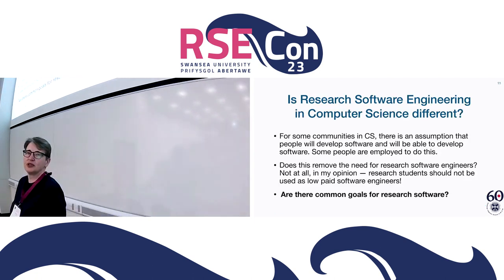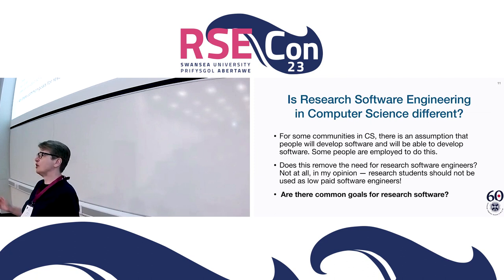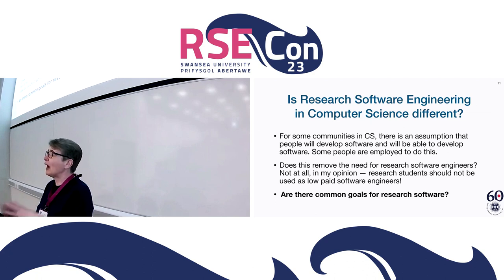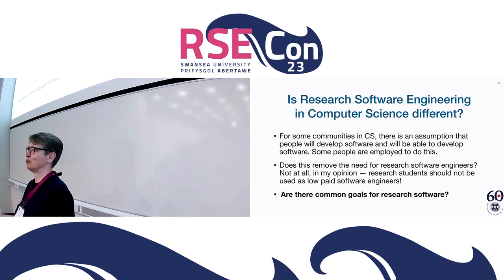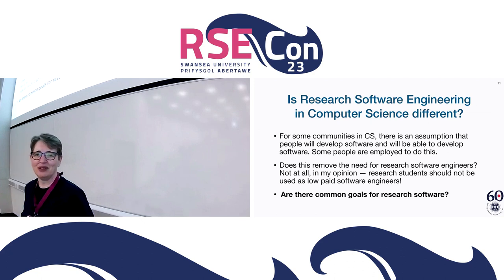Back to the question: is this different? Within some communities in computer science, it is assumed that you know how to code and will be able to develop software. For some RA positions you will develop software, but this doesn't remove the general need for research software engineers — computer science is not different enough to say we don't need such people. I also believe research students should not be used as low-paid software engineers. I have no objection to PhD students developing software, but that's not their main role.